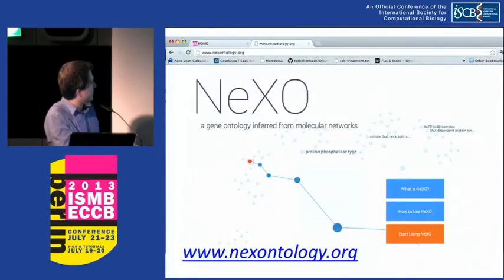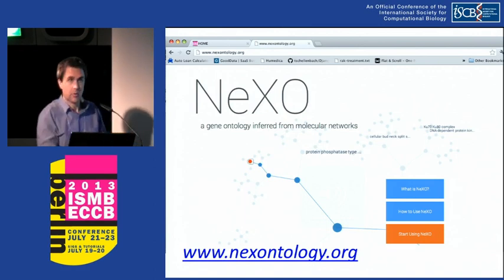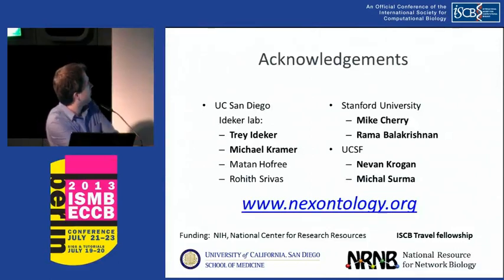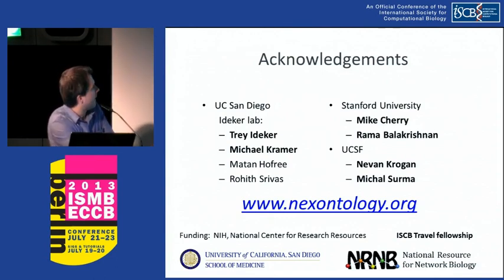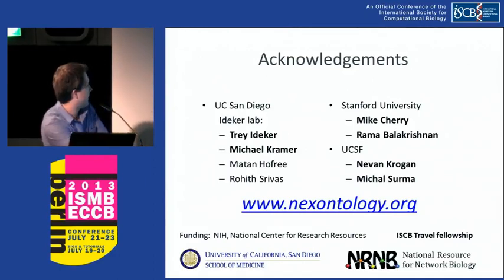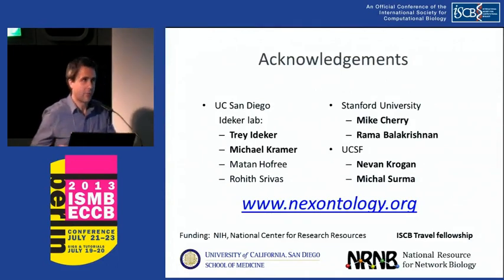We are developing nexontology.org — it's live although it may still have some issues — where you can browse this structure and also the Gene Ontology itself. I'd like to thank Trey Ideker, my postdoc mentor Michael Kramer, who I worked most closely with on this project, Mike Cherry and Rama Balakrishnan for help understanding GO and augmenting it from data, and Nevan Krogan and Michael Surma for the genetic interaction profiling. Thank you very much for listening and I'll take any questions.